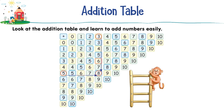Row 3 continued: 6 7 8 9 10. Row 4: 4 5 6 7 8 9 10. Row 5: 5 6 7 8 9 10. Row 6: 6 7 8 9 10. Row 7: 7 8 9 10. Row 8: 8 9 10. Row 9: 9 10. Row 10: 10.